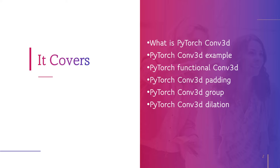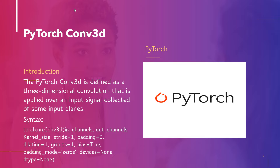So without any delay, let's jump to the topic and discuss about PyTorch Conv3D. PyTorch Conv3D is defined as a 3-dimensional convolution that is applied over an input signal collected from some input planes. The syntax of PyTorch Conv3D is torch.nn.Conv3d, and within this function we use some parameters.